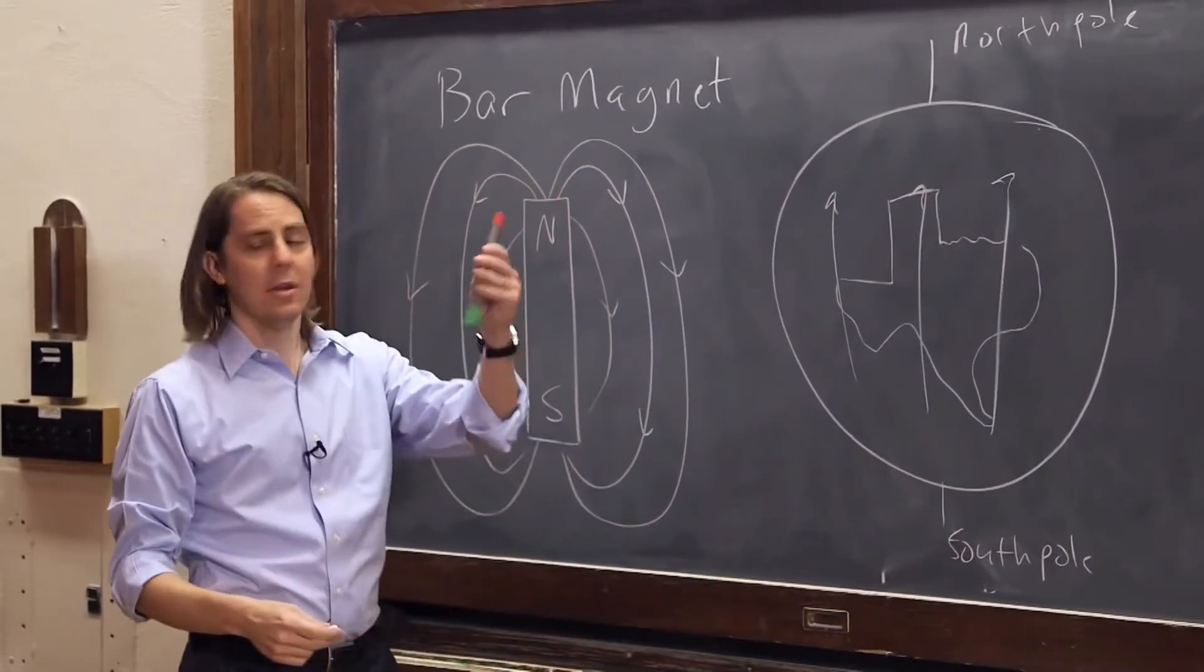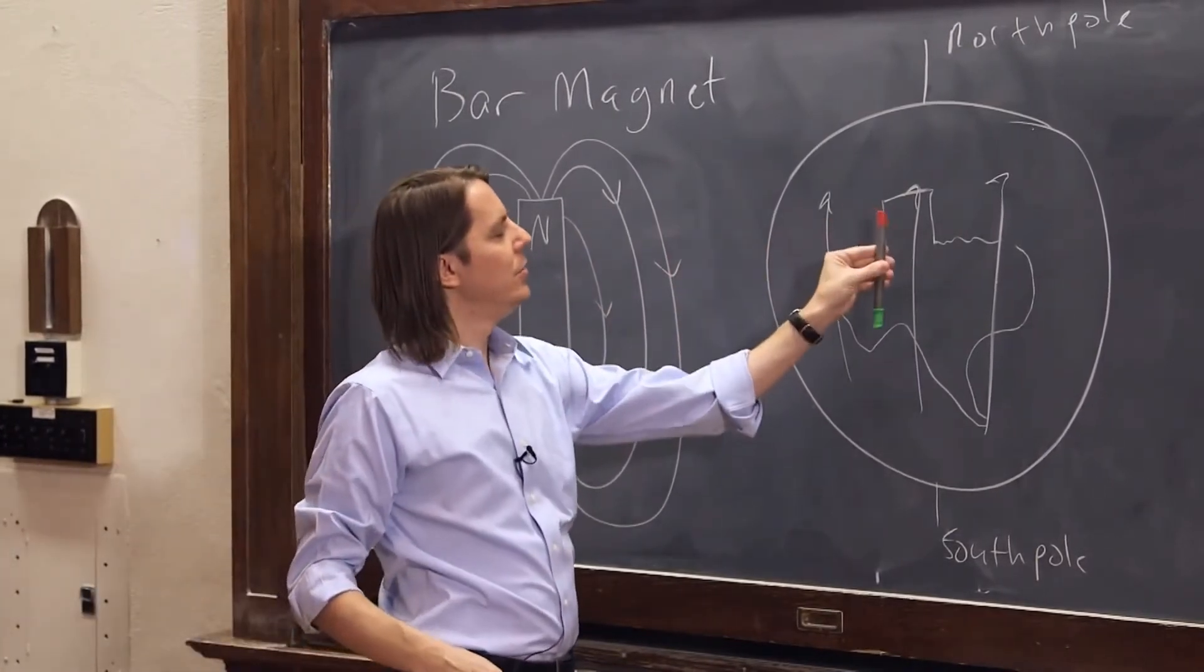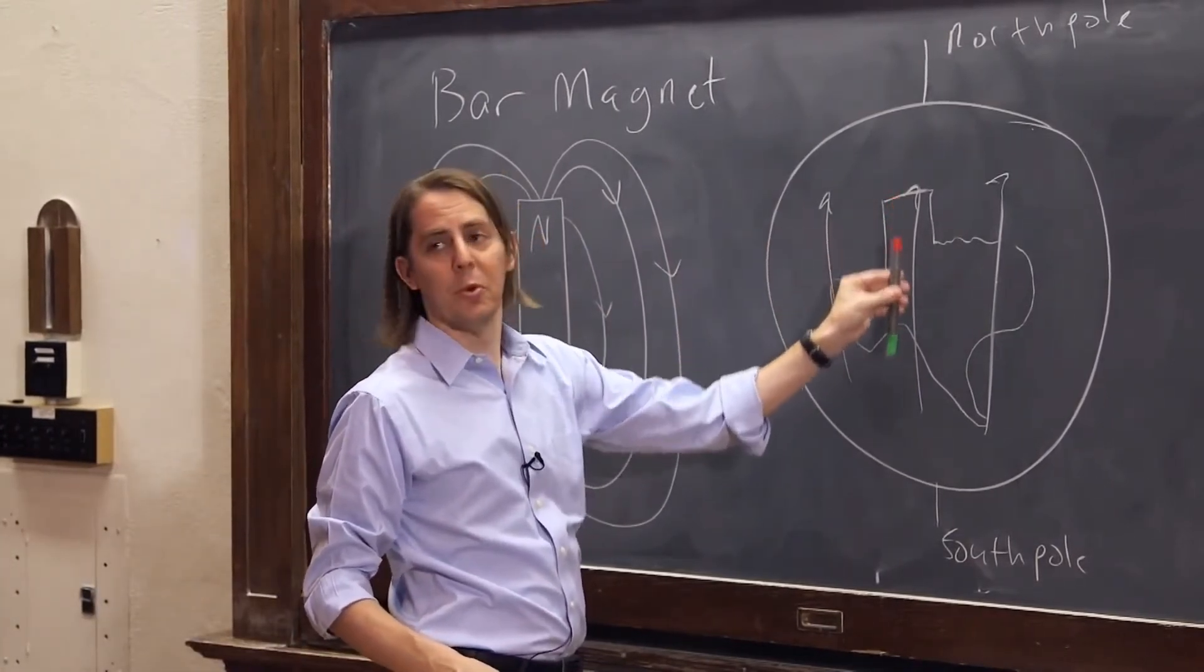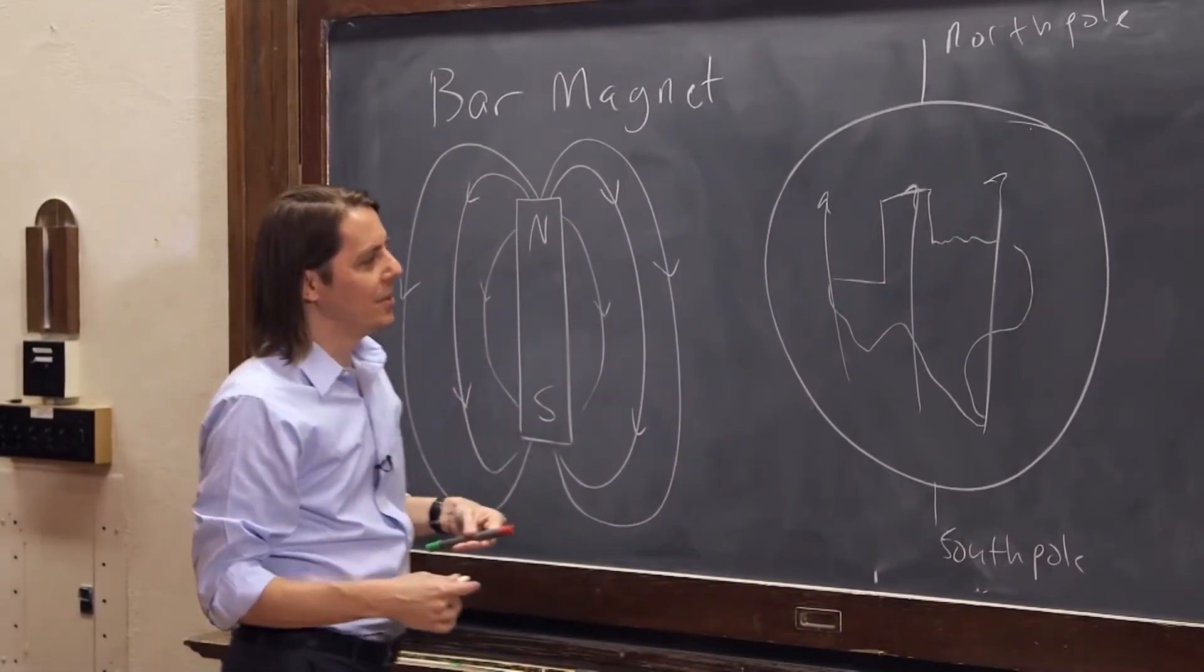So this is why if you take a bar magnet like this, or any magnet with a north and south pole, it'll align to where it points north. The north pole points north. So that's why we call this north and south. That's the historical reason that it got that name.